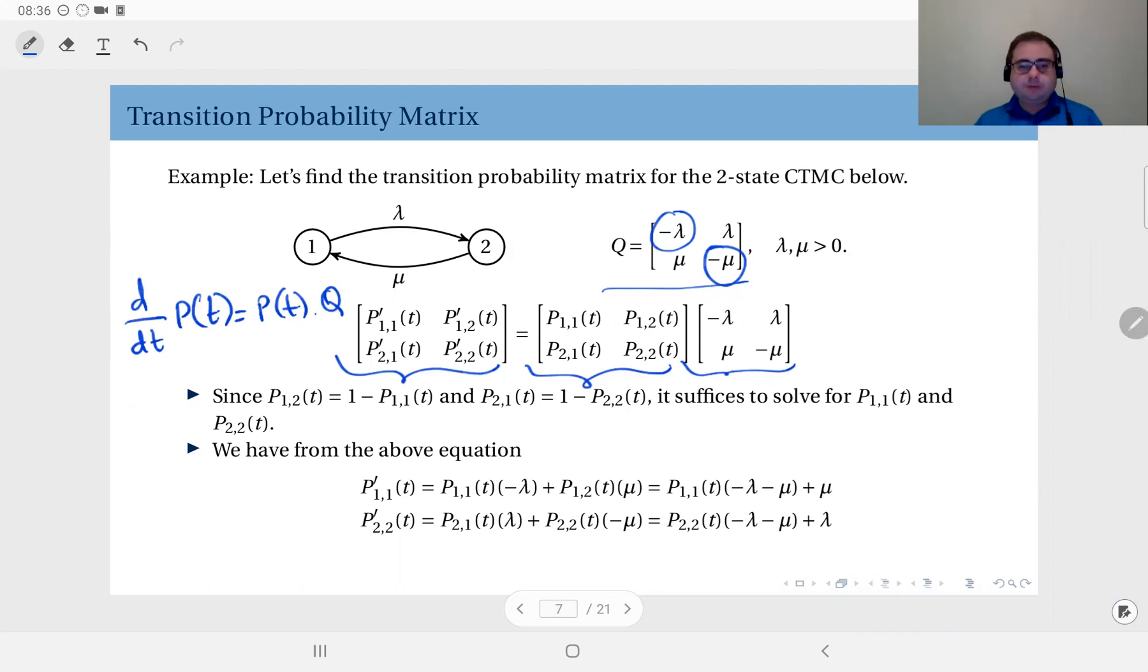Now for this specific system, first of all, you should observe that since all rows of the state transition probability matrix should add up to one, we know that this here would be one minus this, and very similarly this one here is going to be equal to one minus this one here. So from each of these rows, I can just solve one function.